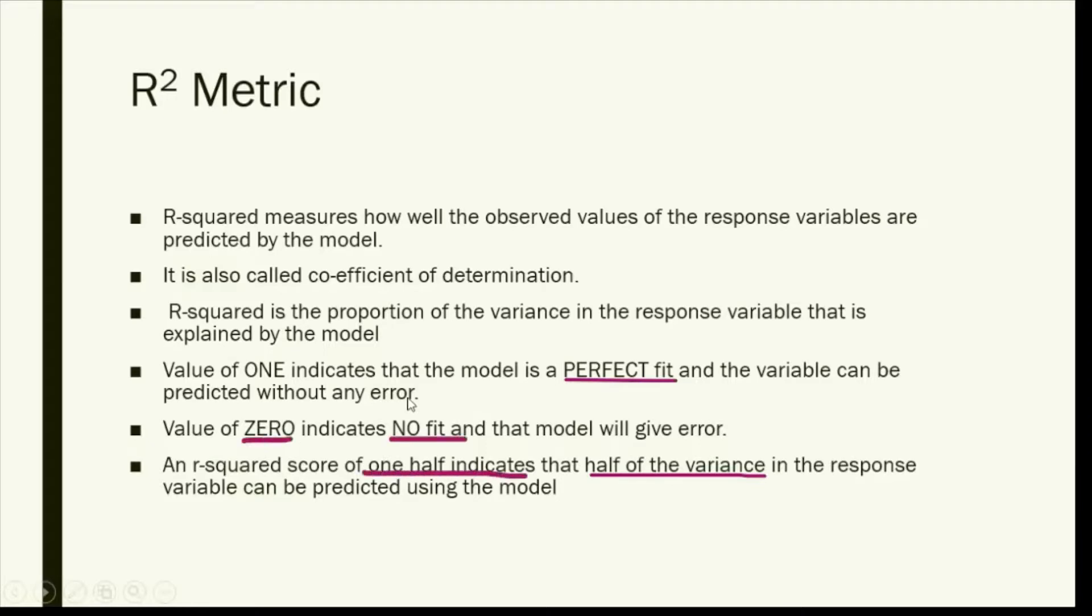If it is zero, that means it is no fit - the model will give me error and it is not a perfect model. If this is half, that means there's half of the variance - it is just giving me half the predicted values as right.